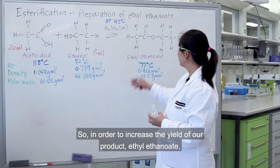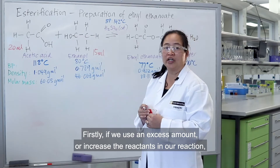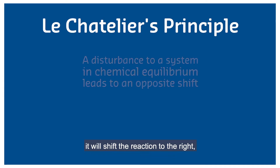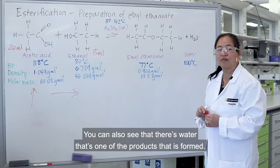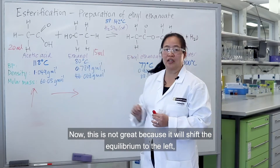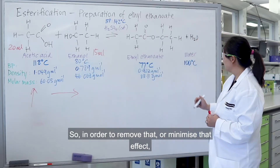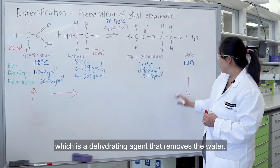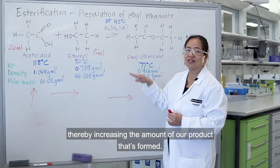In order to increase the yield of our product ethyl ethanoate we can do a number of things. Firstly, if we use an excess amount of reactants — for example acetic acid — according to Le Chatelier's principle it will shift the reaction to the right, thereby increasing the amount of our products. Water is also one of the products formed, which is not great because it will shift the equilibrium to the left, reducing the product formed. So to minimise that effect we add sulfuric acid, which is a dehydrating agent that removes the water. When the water is removed the equilibrium will shift to the right according to Le Chatelier's principle, thereby increasing the amount of our product formed.